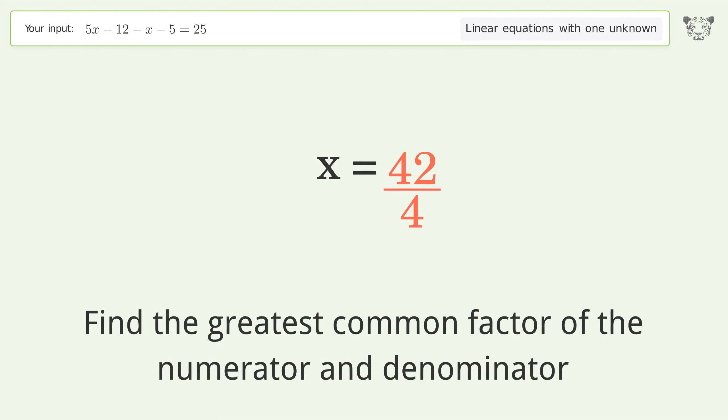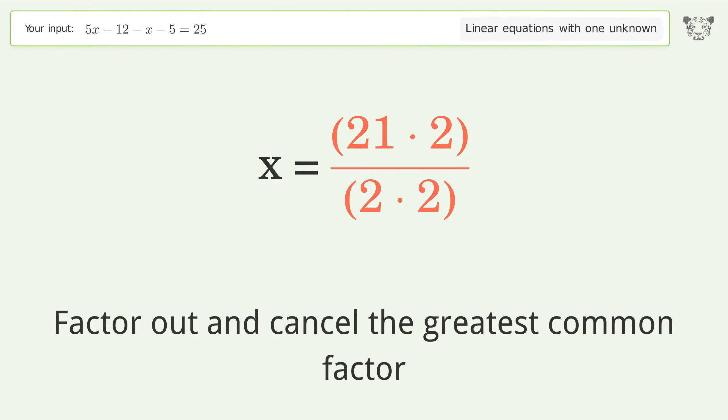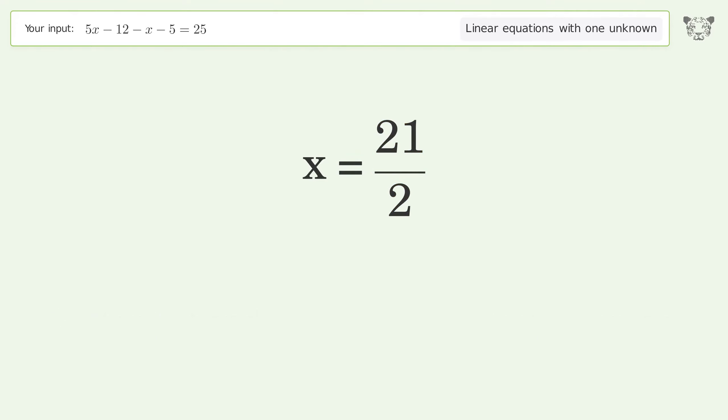Find the greatest common factor of the numerator and denominator. Factor out and cancel the greatest common factor. And so the final result is x equals 21 over 2.